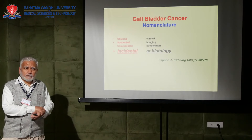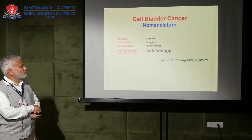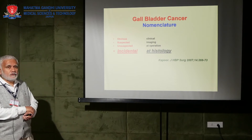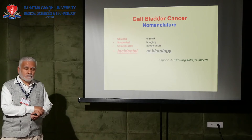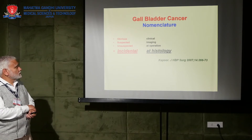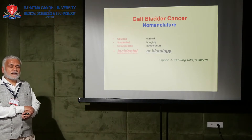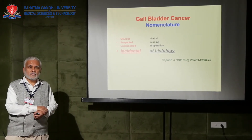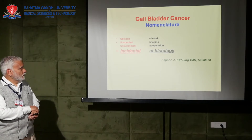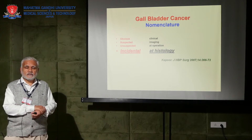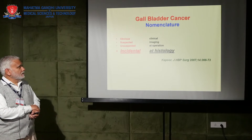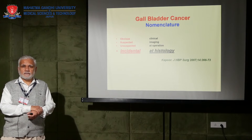First we should be clear about the nomenclature. In the literature there is a lot of confusion about various terms used in relation to gallbladder cancer. What we proposed and suggested from SGPGI-IMS Lucknow, where I worked earlier for more than three decades, was that if a diagnosis of gallbladder cancer is made on clinical grounds — based on history and examination findings — then it should be called obvious gallbladder cancer. On the other hand, if the clinical picture is like gallstone disease but imaging — either ultrasound and/or CT or MRI — raises a suspicion, then it should be called a suspected gallbladder cancer.